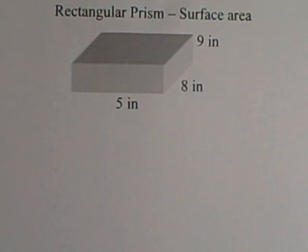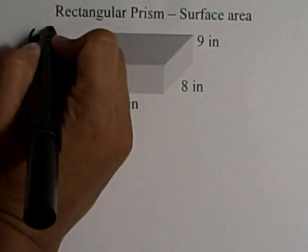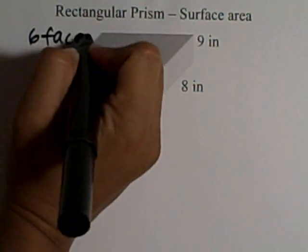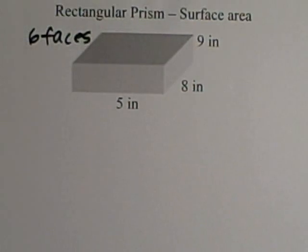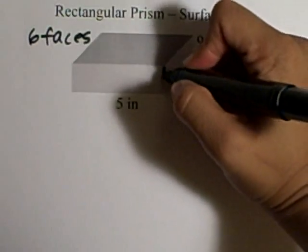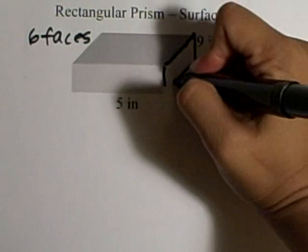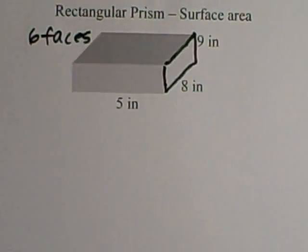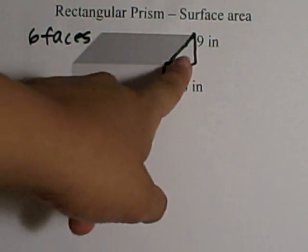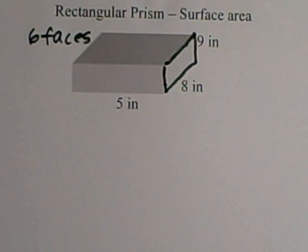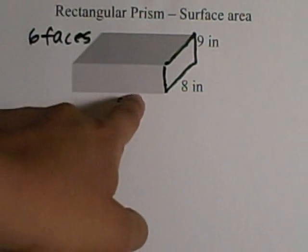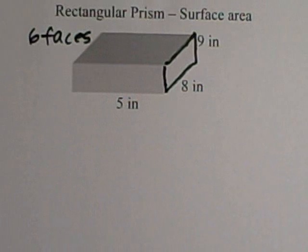A rectangular prism has six faces. What I mean by a face is that this right here would be considered one face. If I look, I have one, two, three faces looking at me. I then have one, two, three faces that are hidden, giving it a total of six faces.